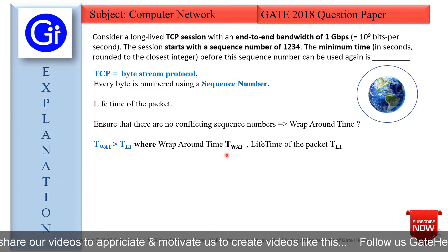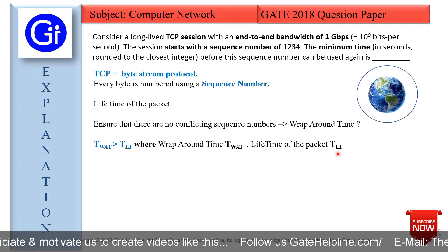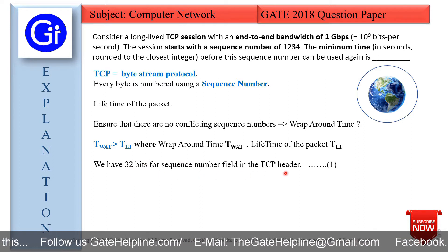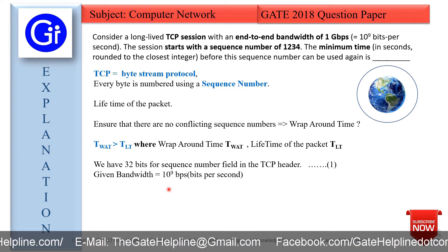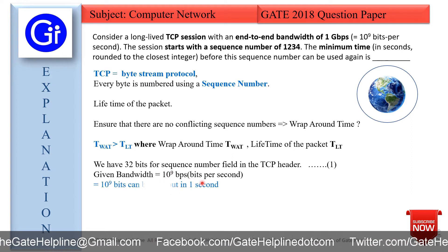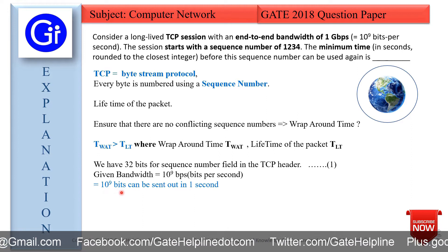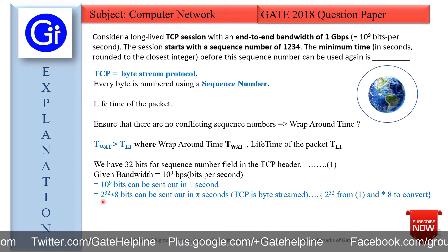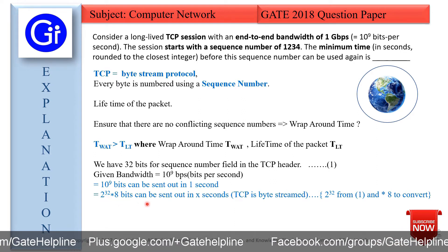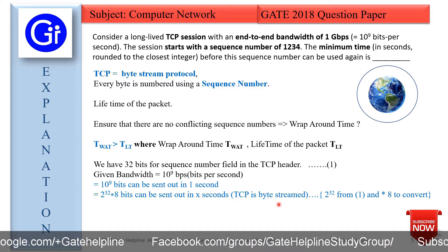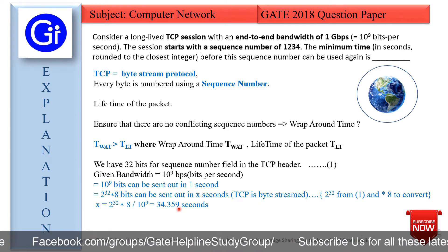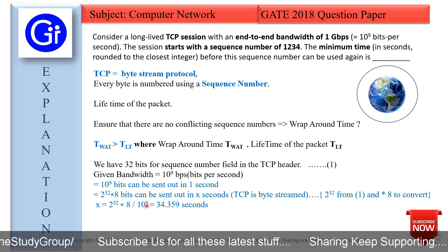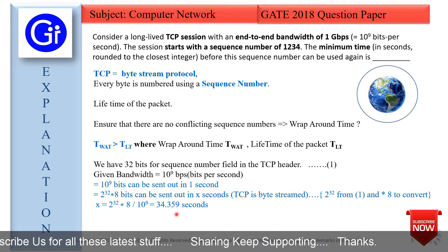Where wraparound time is T_WAT and lifetime of the packet is T_LT. We have 32 bits for the sequence number field in the TCP header. Given bandwidth is 10 raised to power 9 bits per second, meaning 10 raised to power 9 bits can be sent in 1 second. So 2 raised to power 32 multiplied by 8 bits can be sent in X seconds. Since TCP is a byte stream, X equals 2 raised to power 32 times 8, divided by 10 raised to power 9, which equals 34.359 seconds.